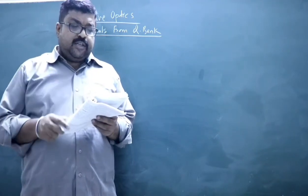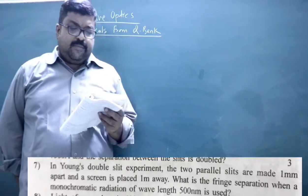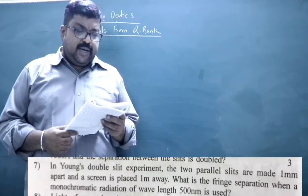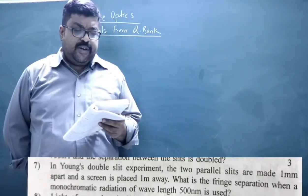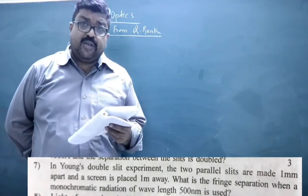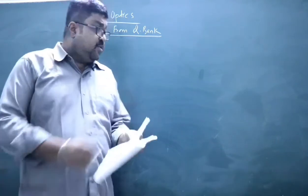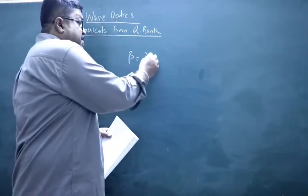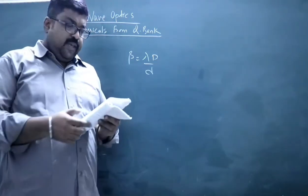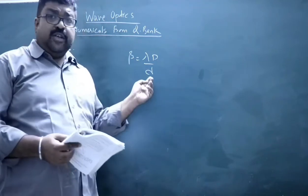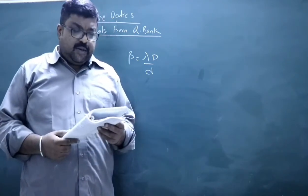Question number seven: In Young's double slit experiment, two parallel slits are made 1 mm apart and the screen is placed 1 meter away. What is the fringe separation when monochromatic radiation of wavelength 500 nm is used? Fringe separation equals fringe width β = λD/d. All quantities are given — λ = 500 nm, D = 1 m, d = 1 mm — so you can directly calculate β.